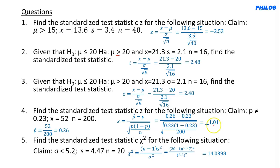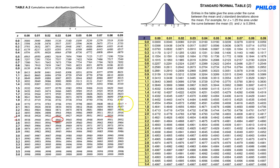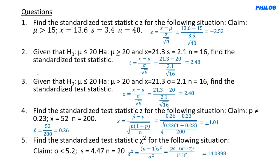For Question 4 (z = 1.01, two-tailed), look up 1.01 in the z-table: 0.8438. Then 1 − 0.8438 = 0.1562. Because this is a two-tailed test, multiply by 2: p-value = 0.1562 × 2 = 0.3124. The p-value for Question 5 (chi-square) will be covered in a separate tutorial.